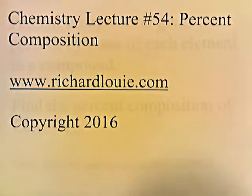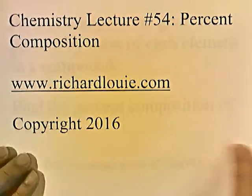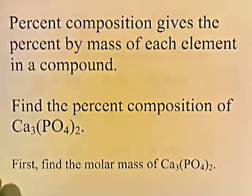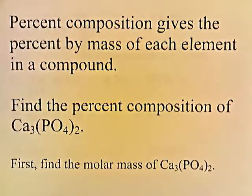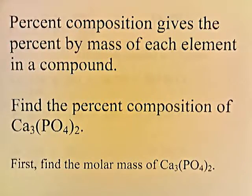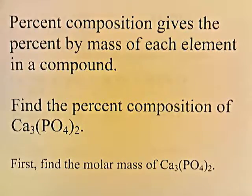Chemistry lecture number 54: percent composition. Percent composition gives the percent by mass of each element in a compound. For example, let's find the percent composition of calcium phosphate. The first thing we need to do is find the molar mass of calcium phosphate.